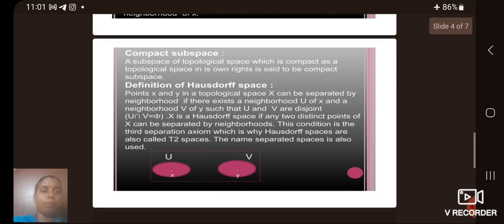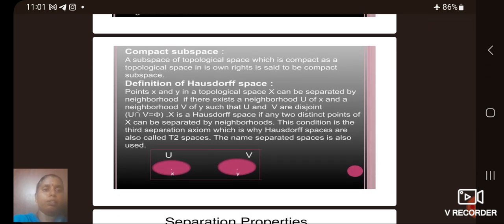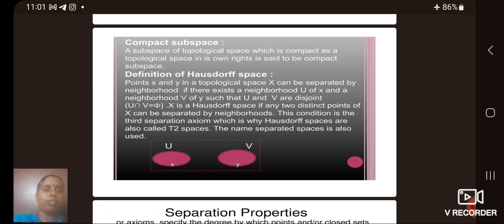Then next, we see the compact subspace. A subspace of a topological space which is compact as a topological space in its own right is said to be compact subspace.